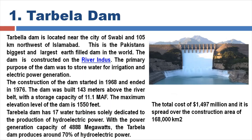Pakistan's agriculture is irrigated-based, requiring a regular water supply. The two purposes of Tarbela Dam are hydropower generation and irrigation. Construction started in 1968 and ended in 1976. The dam was built 143 meters above the river bed, with a storage capacity of 11 million acre feet. The maximum elevation level of the dam is 1,550 feet.